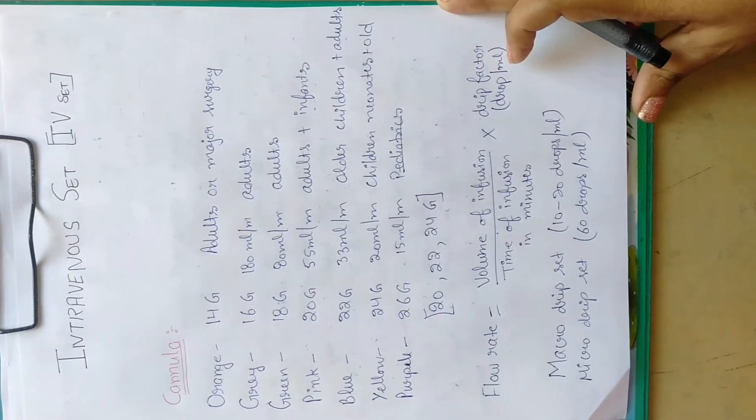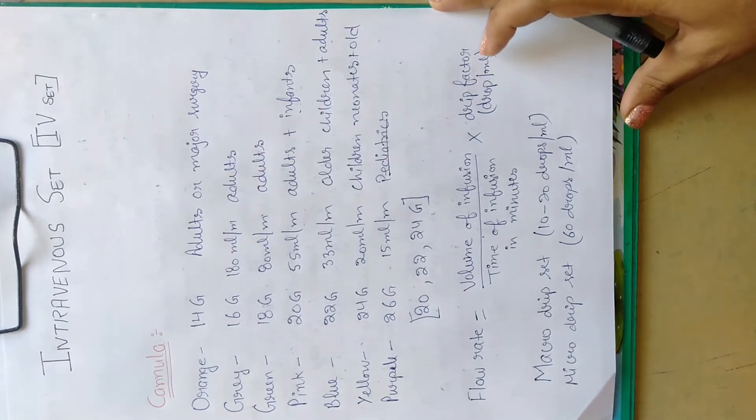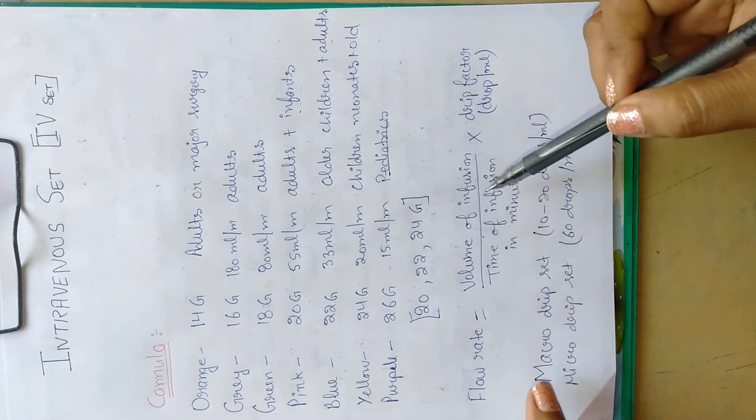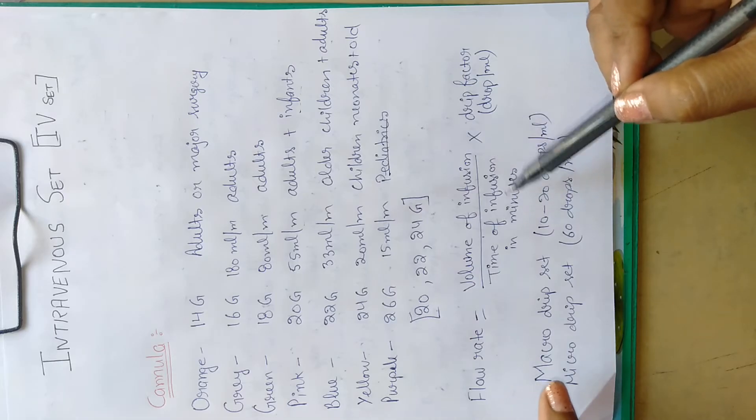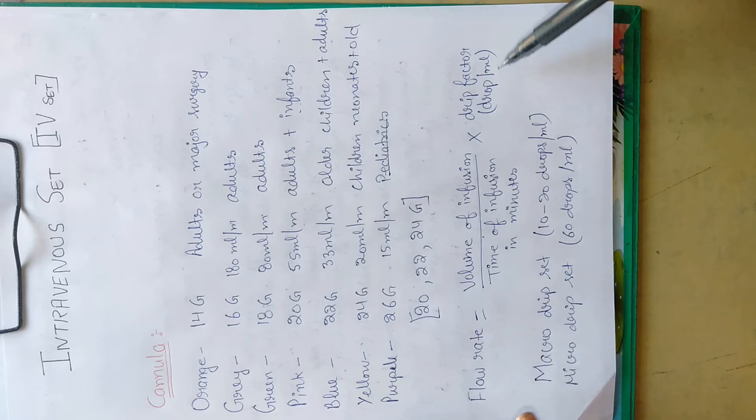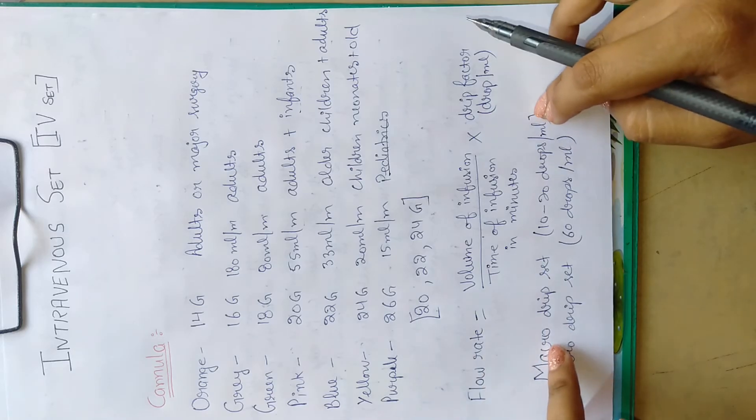The examiner will also ask questions about the calculation of flow rate. For the flow rate, volume of infusion equals time of infusion in minutes multiplied by drip factor drops per ml. You can calculate the flow rate by using this formula.